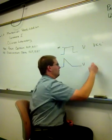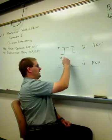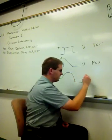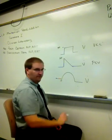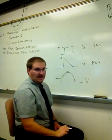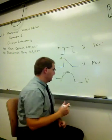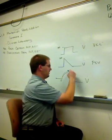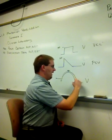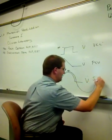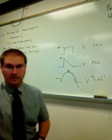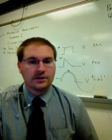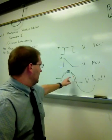Pressure control ventilation produces a descending ramp waveform — it starts at peak flow and tapers down. You can see that pressure control ventilation is much more similar to physiologic breathing. However, pressure control ventilation does not care about the volume delivered.